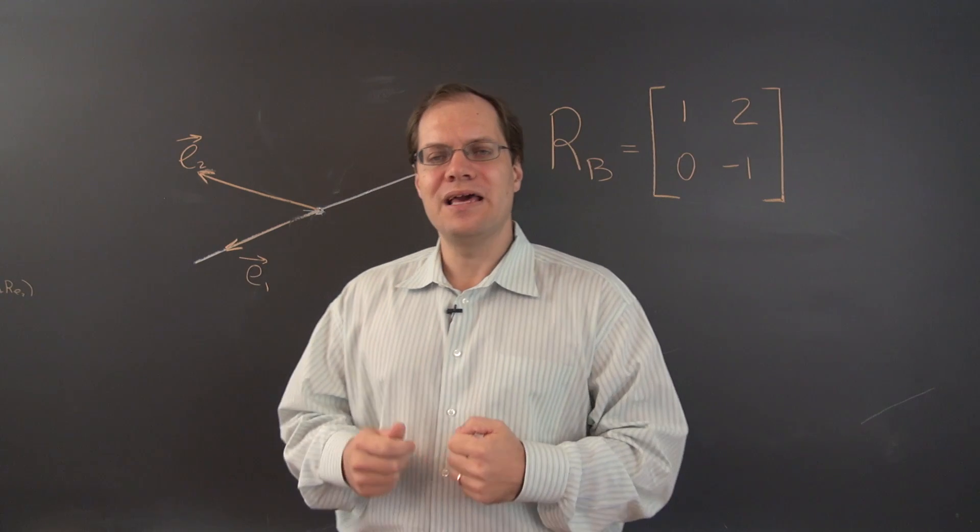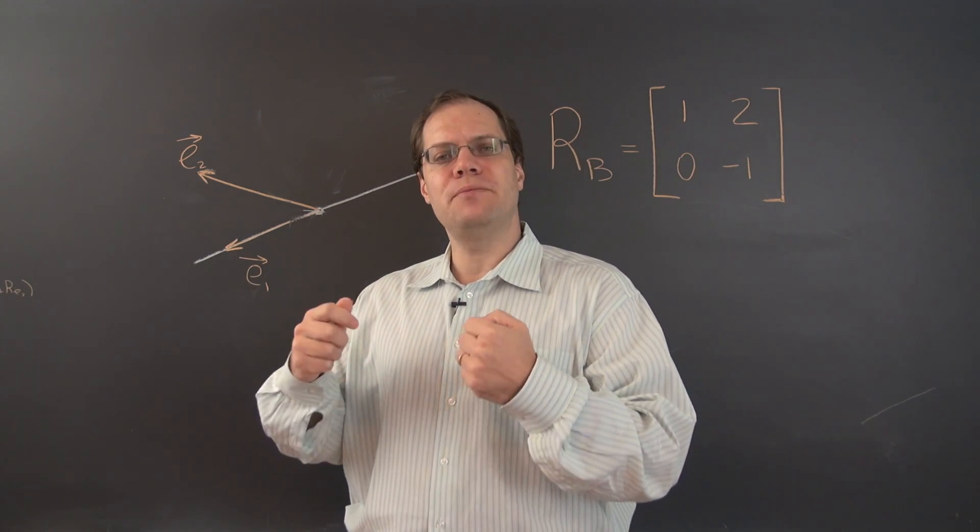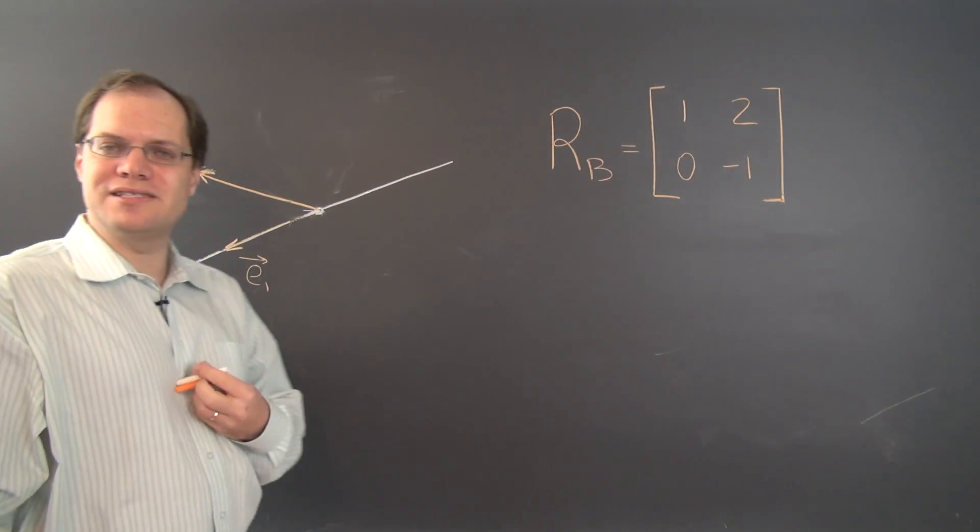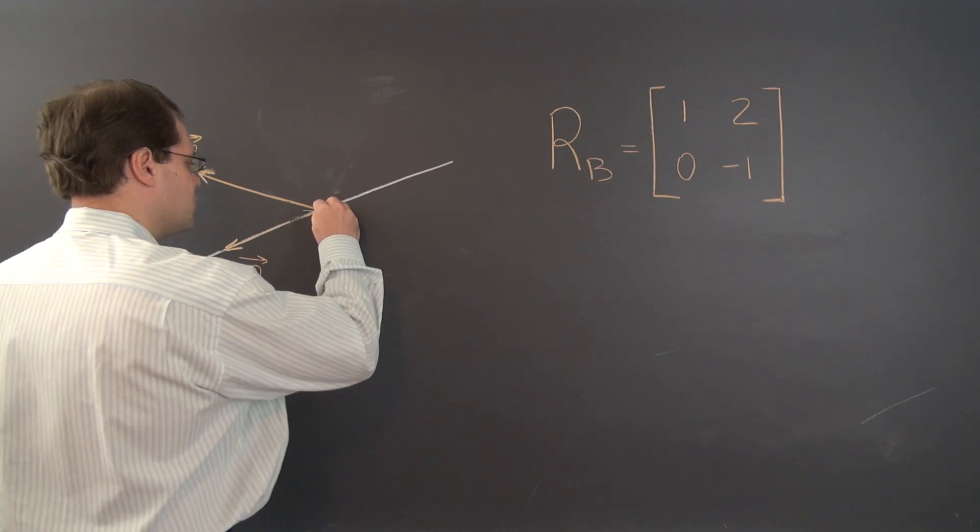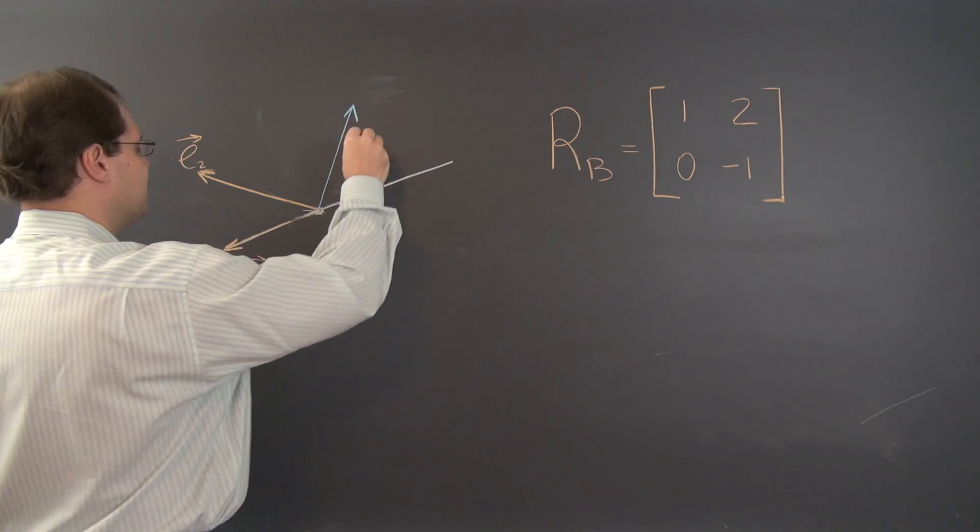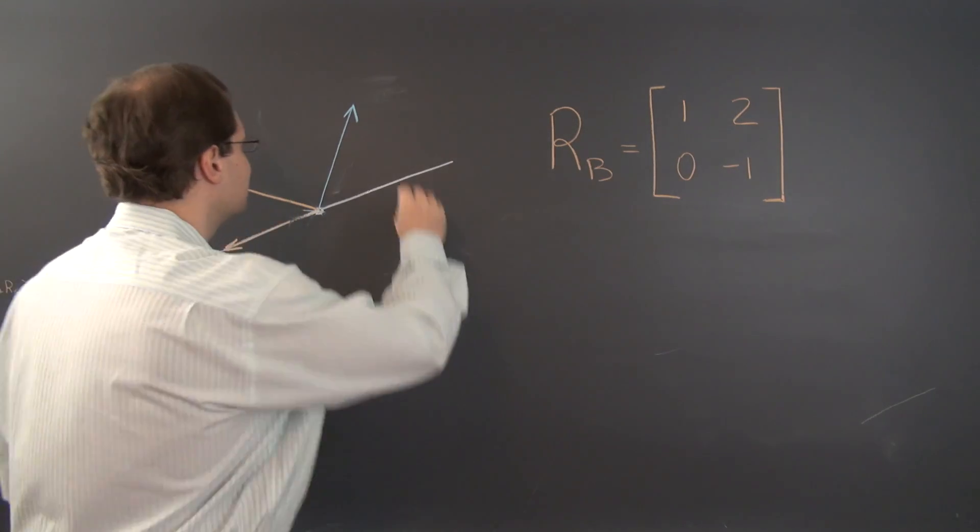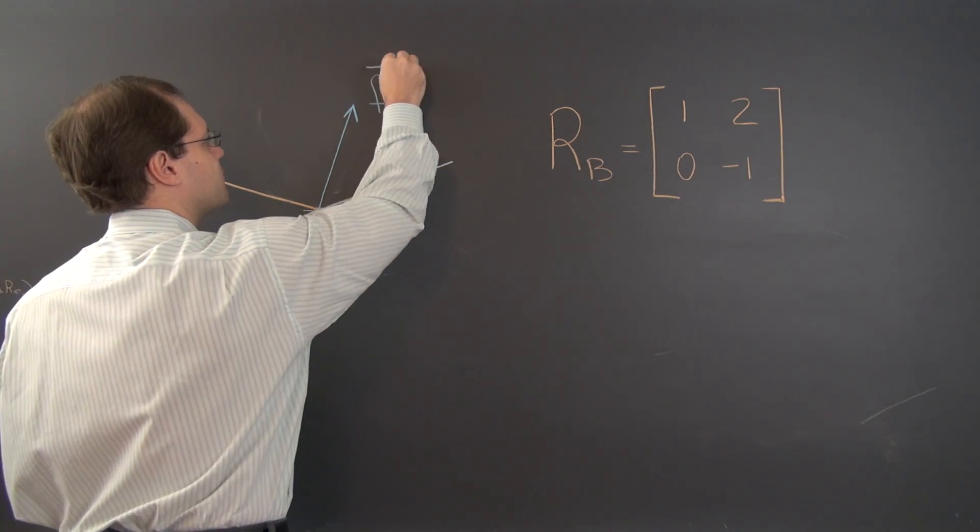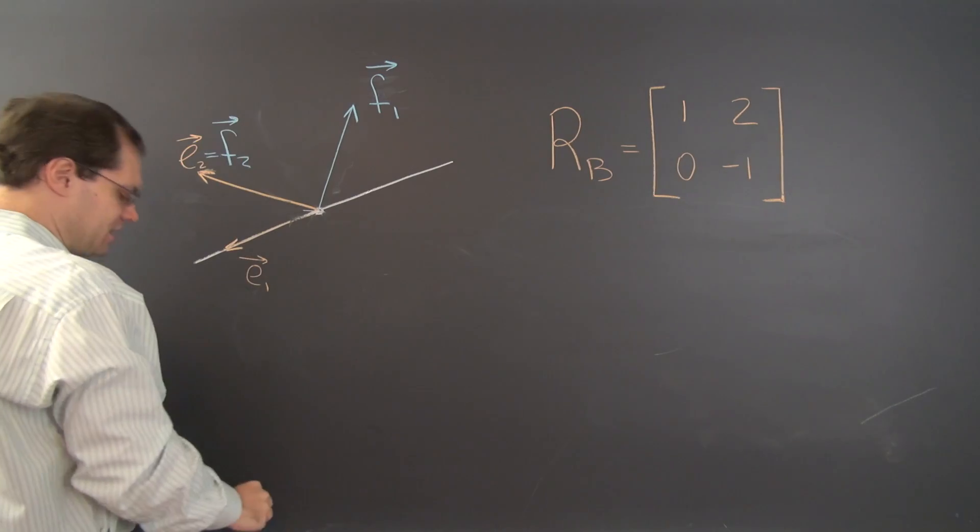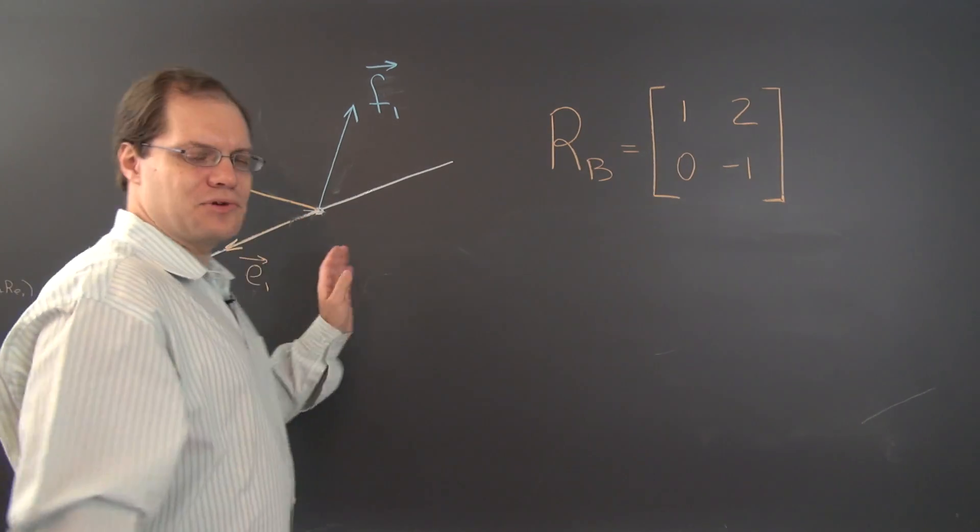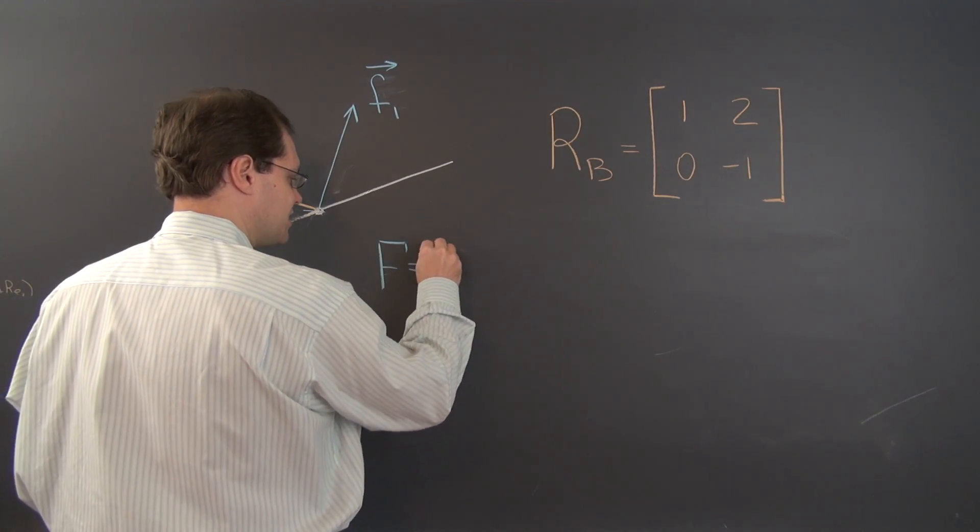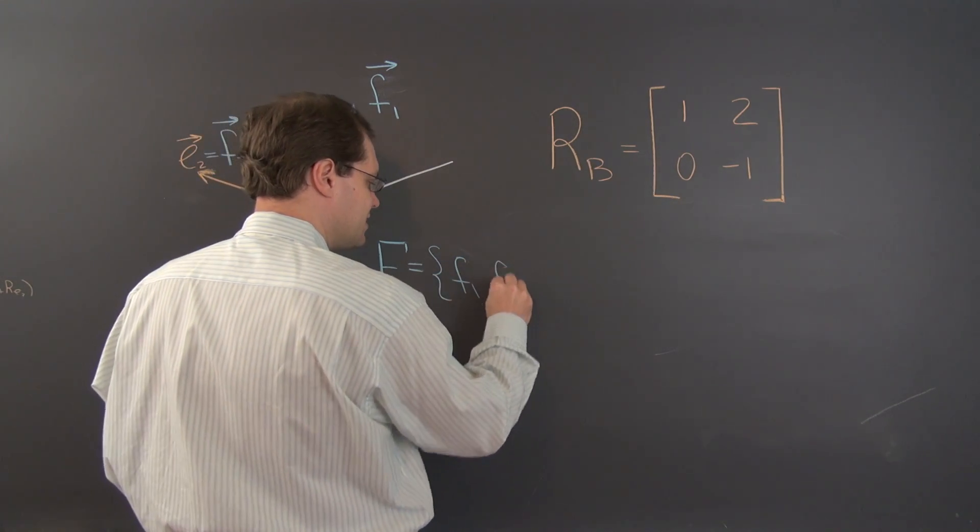So what we're going to do right now is consider an alternative basis and repeat part of the same exercise. Our new basis will be the vector e2 will be the same, but instead of e1 we'll use this vector also at the 45 degree angle to the line. We're actually going to change the names of these vectors. So this will be f1, this will now also be f2.